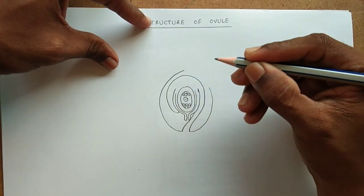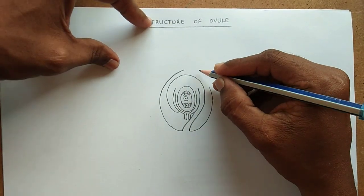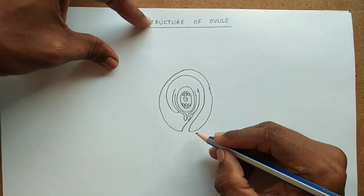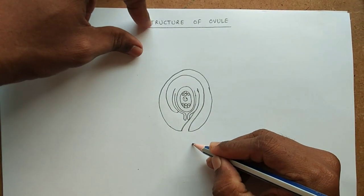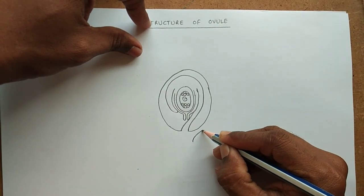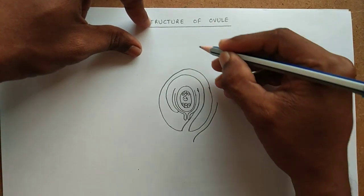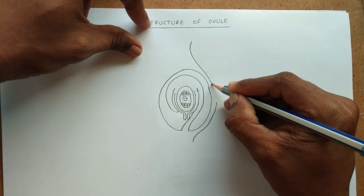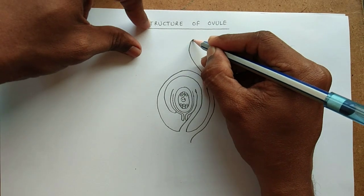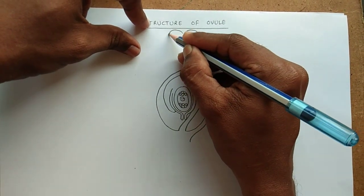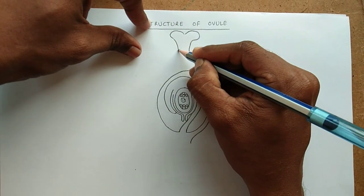And this is the basement. From here we have to draw that. And this is stigma and style.